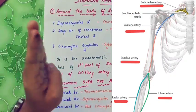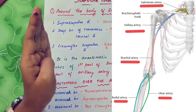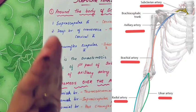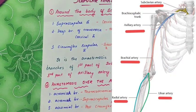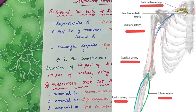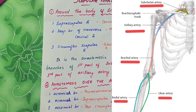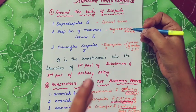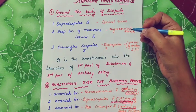The subclavian artery continues to become the axillary artery. The axillary artery continues to become the brachial artery. The brachial artery will further divide into the radial artery and the ulnar artery. In both the subclavian artery and axillary artery, we divide into three parts: first part, second part, and third part.